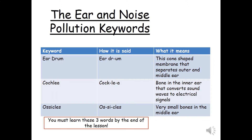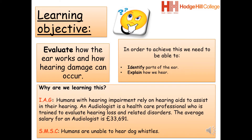Here are some keywords for you to remember during this lesson — I suggest you pause the video here and copy these down. First, we have the eardrum: the cone-shaped membrane that separates the outer and middle ear. Next, the cochlea: the bone in the inner ear that converts sound waves into electrical signals. Finally, the ossicles: very small bones in the middle ear.